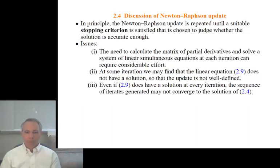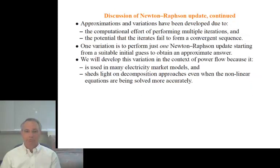It's got some problems. We need to calculate a matrix of partial derivatives. We can find that the linear equations don't have a solution. And even if they do have a solution, they may not converge. For that reason, various approximations and variations have been developed. They're aimed at reducing the computational effort and dealing with the possibility that the iterates either don't work, we can't solve for the update, or the iterates fail to form a convergent sequence.